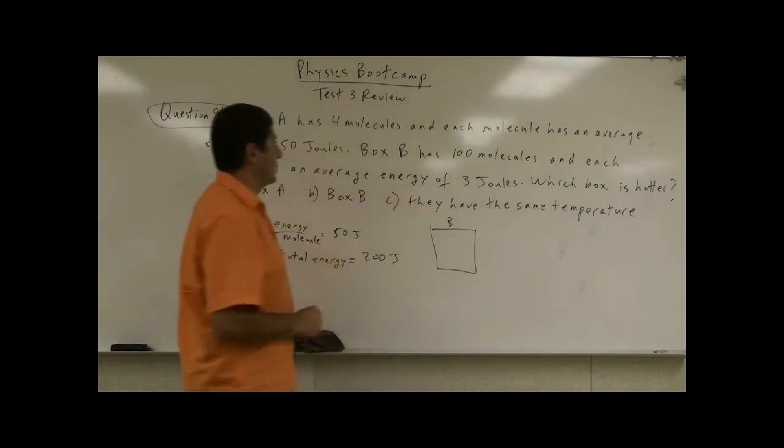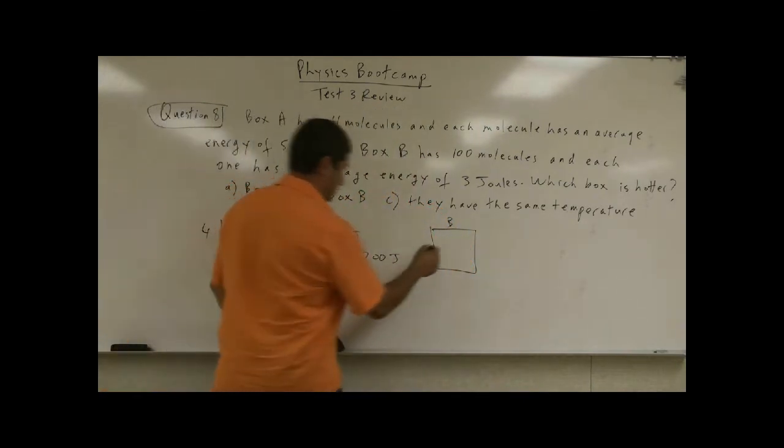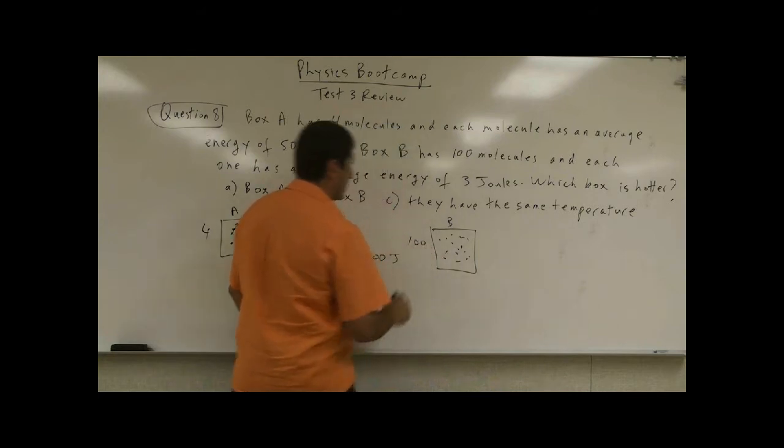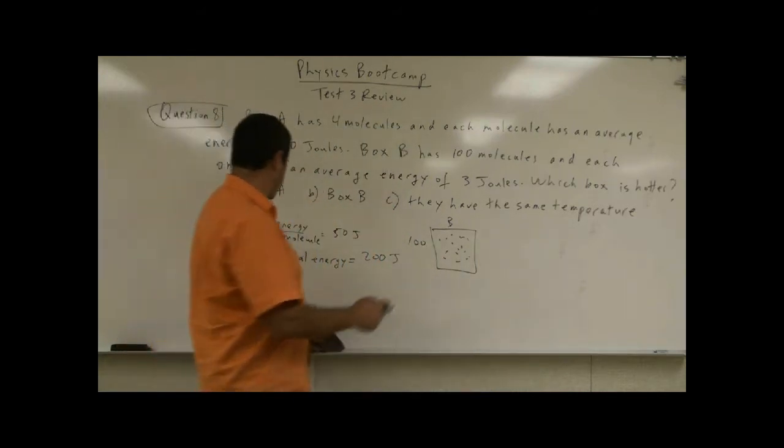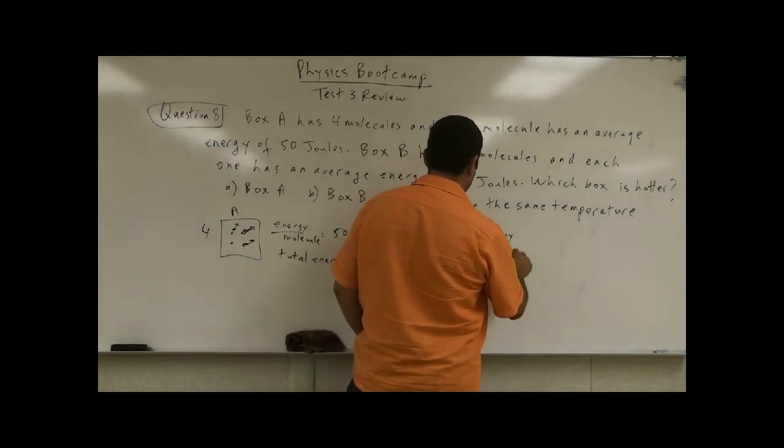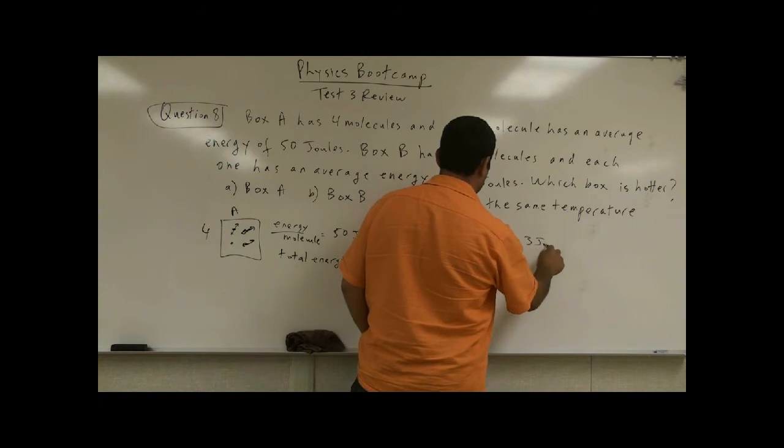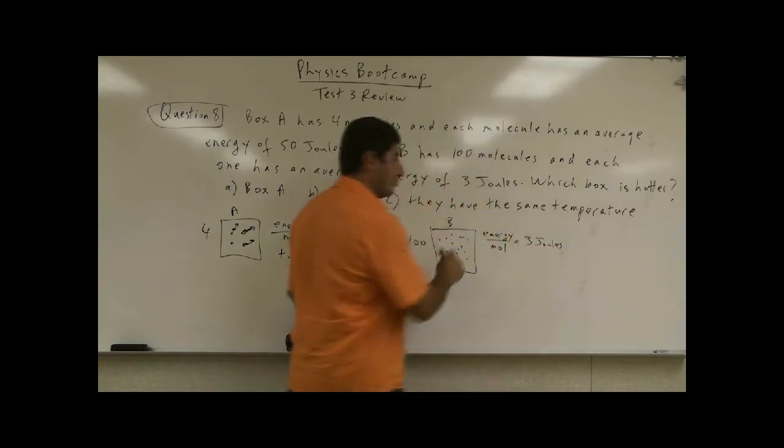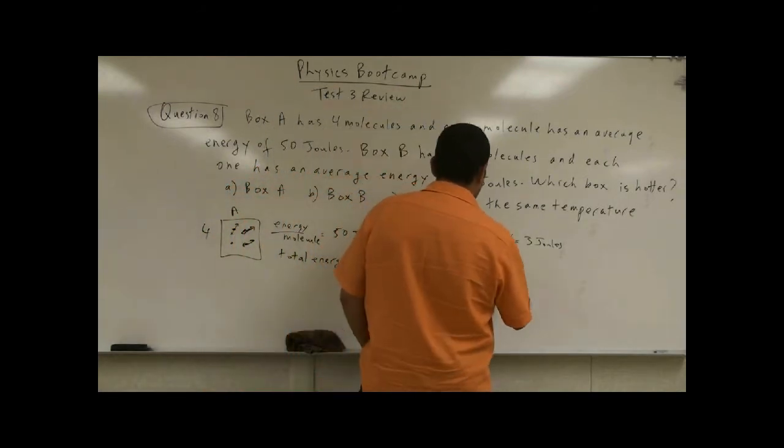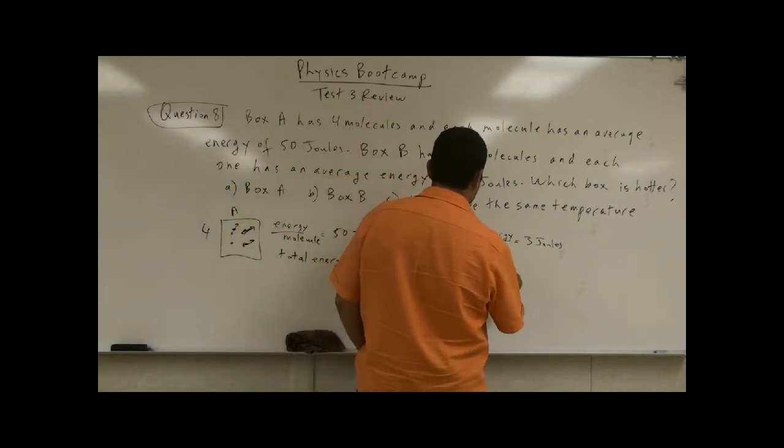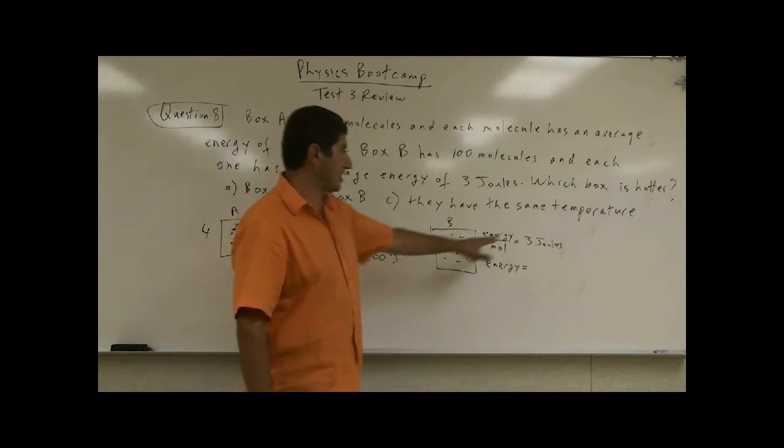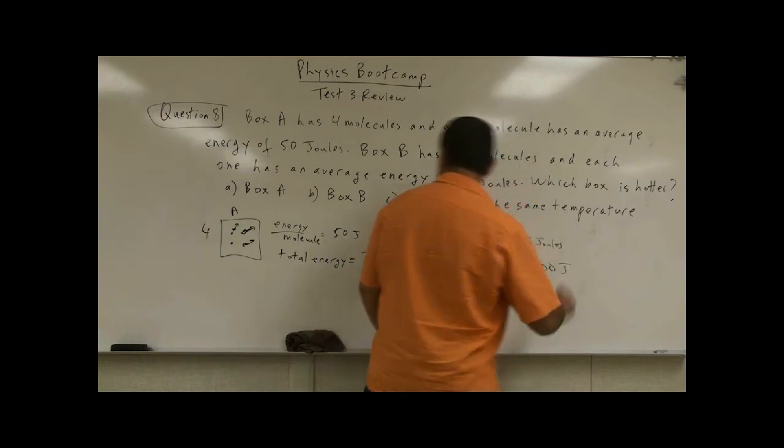Box B has how many? 100 molecules, a lot of them. Each one is 3 joules. Energy per molecule, 3 joules. So each one is not moving very fast. But the total energy, since there is 100, 100 times 3, that's 300.